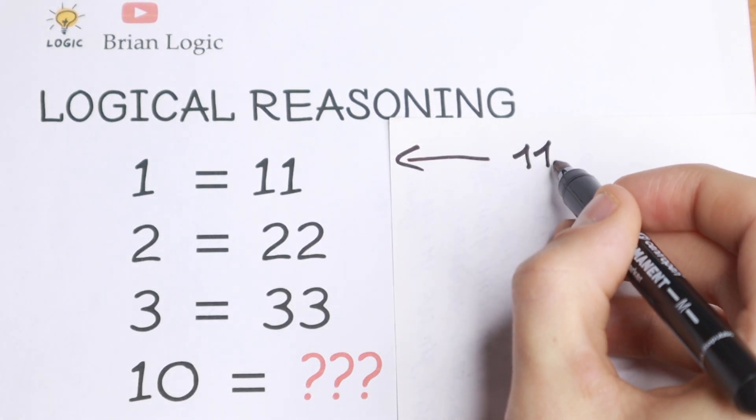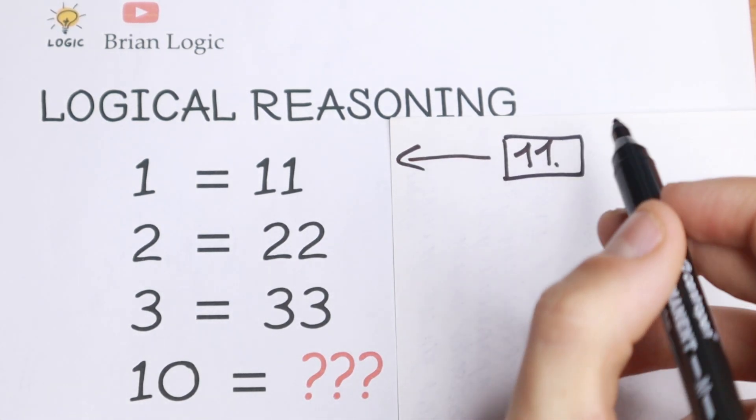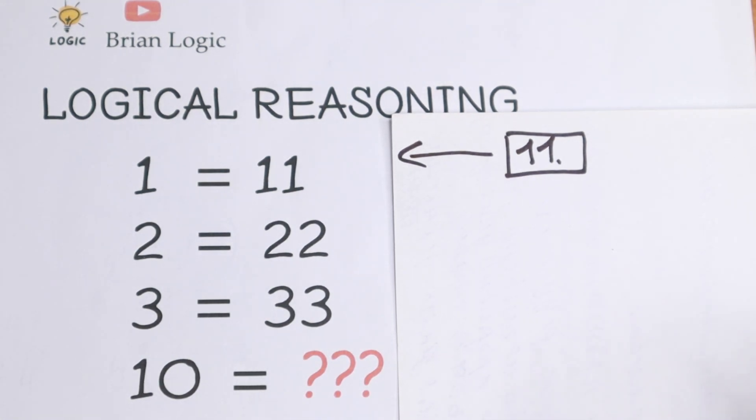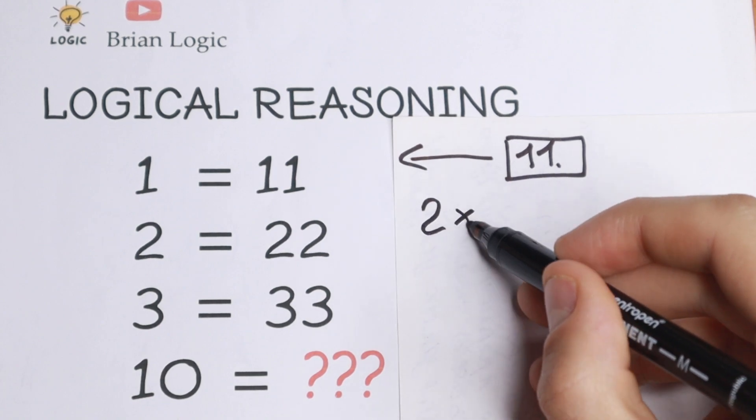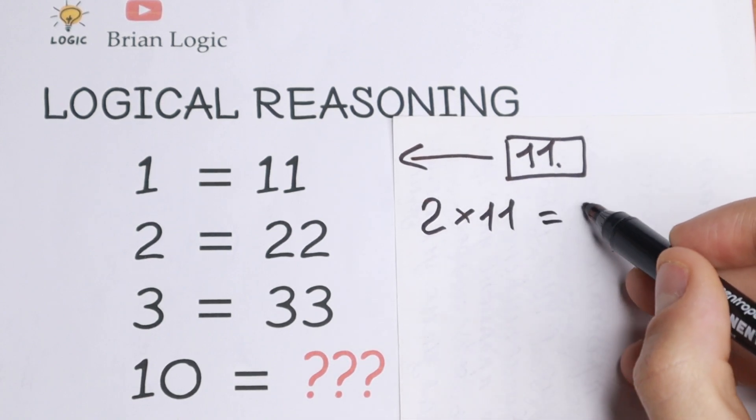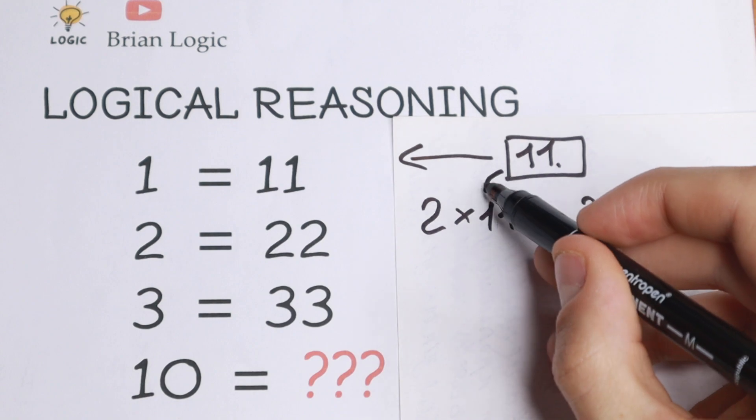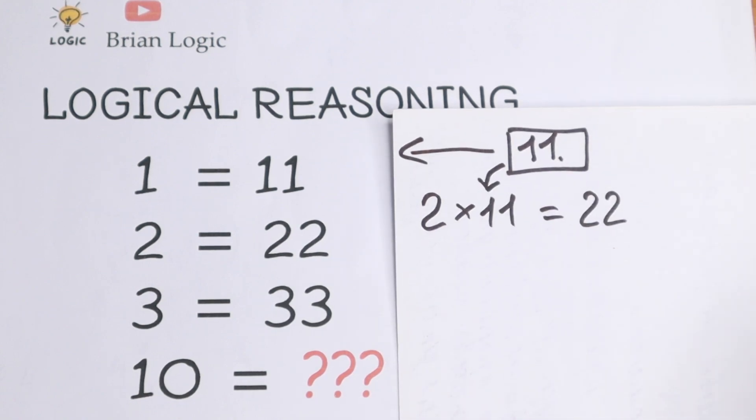11 is our key number because in the second row we have an interesting case: 2 times 11 equals 22.